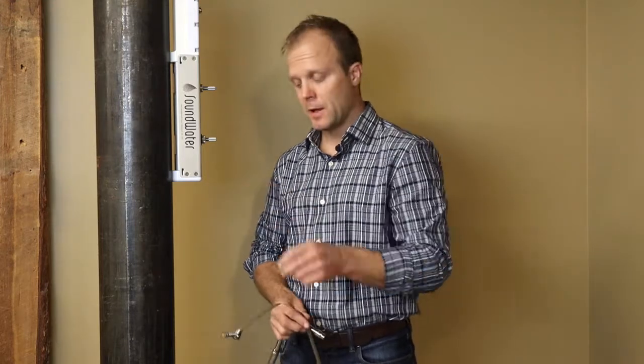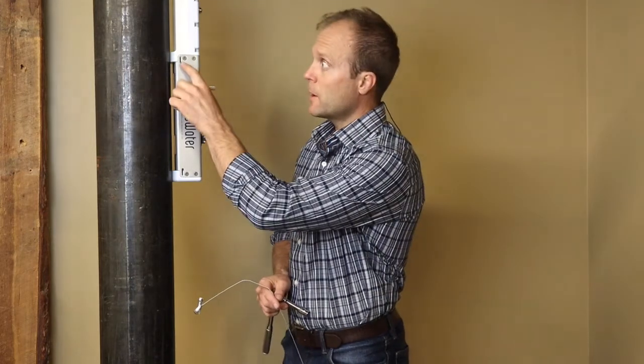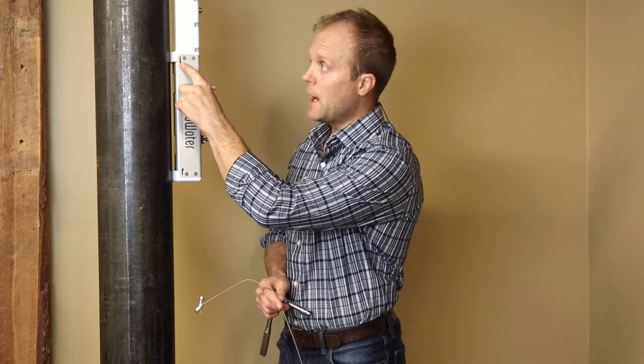So the next thing we'll do is attach the hose clamps to mount the meter permanently. All of our flow meters ship with everything you need to install and operate them, including two hose clamps. We're going to install the hose clamps one at the bottom and one at the top through the half inch slots.